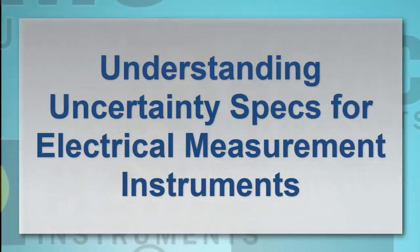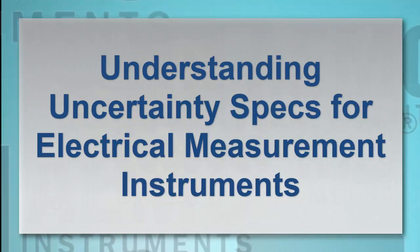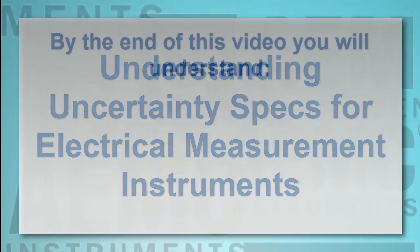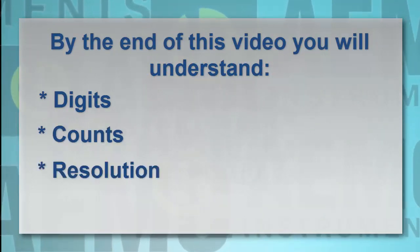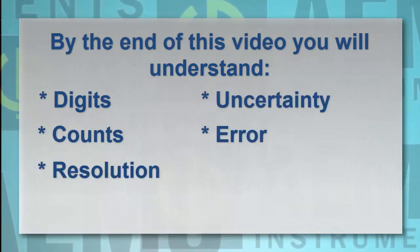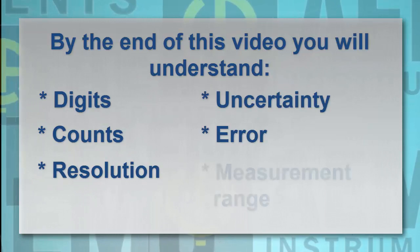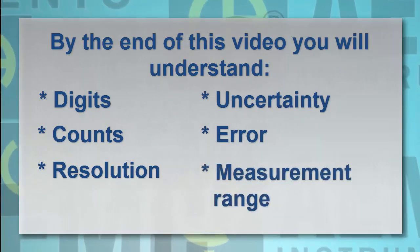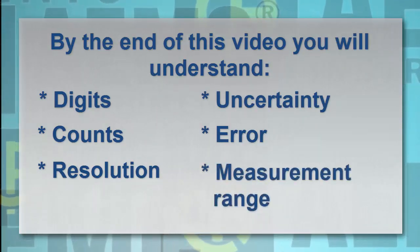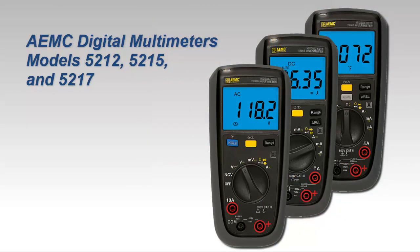This video describes how to determine accuracy for electrical measurement instruments. We define terms such as digits, counts, resolution, uncertainty, and error. We also explain the importance of selecting the right measurement range when taking a reading. In this video, we use a digital multimeter as our demonstration instrument. However, most of what we'll cover also applies to other types of instruments.